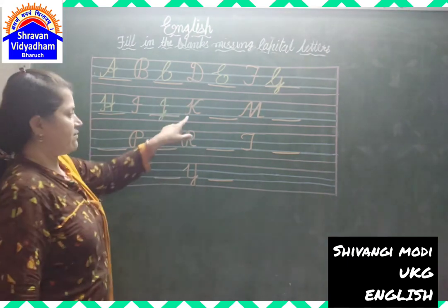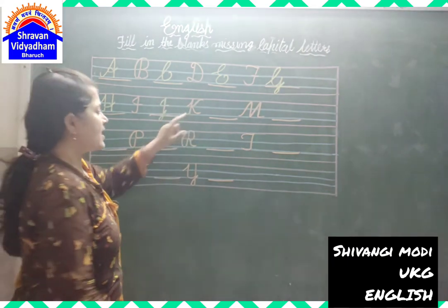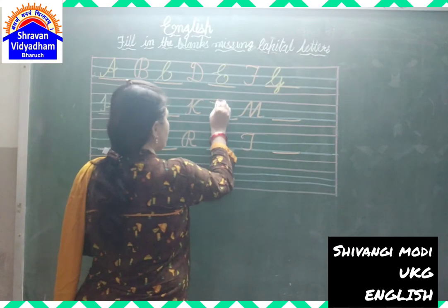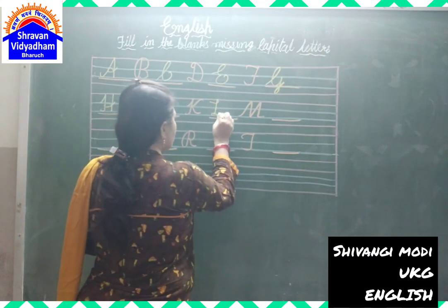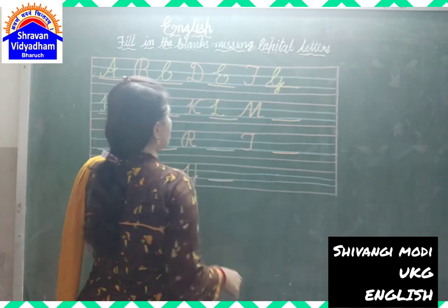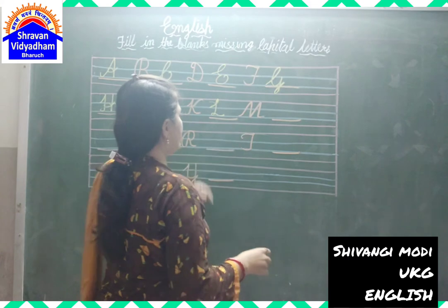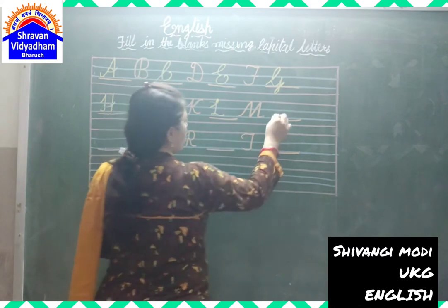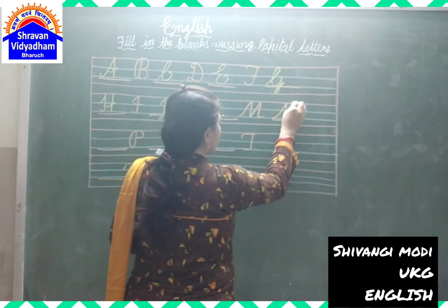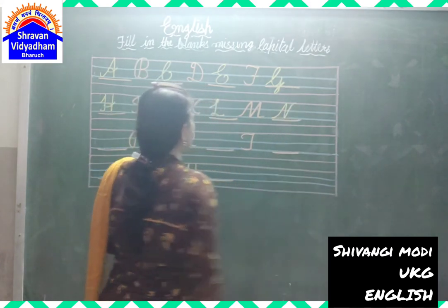K for Kite. L for Lotus. M for Mango. N for Nest.